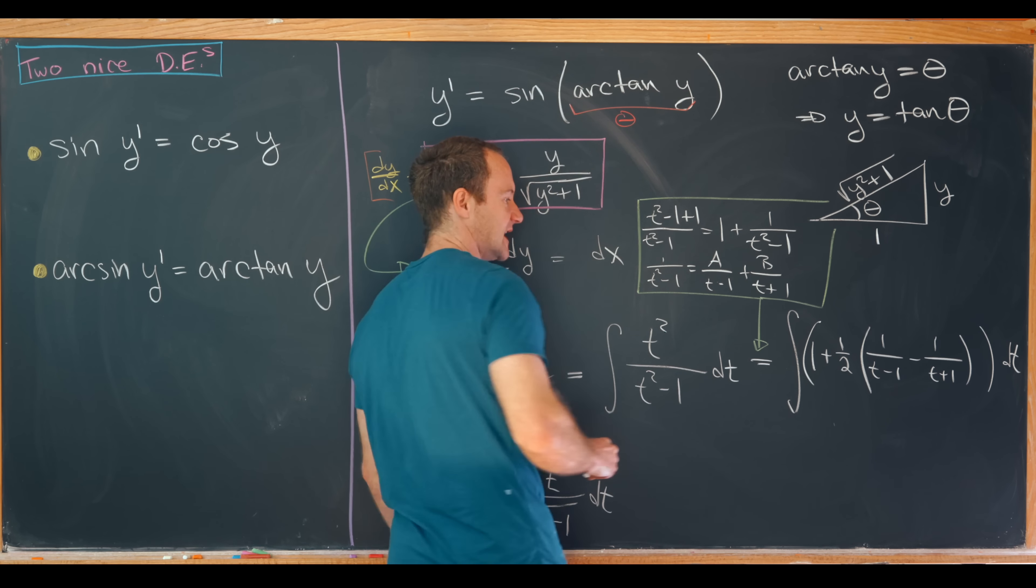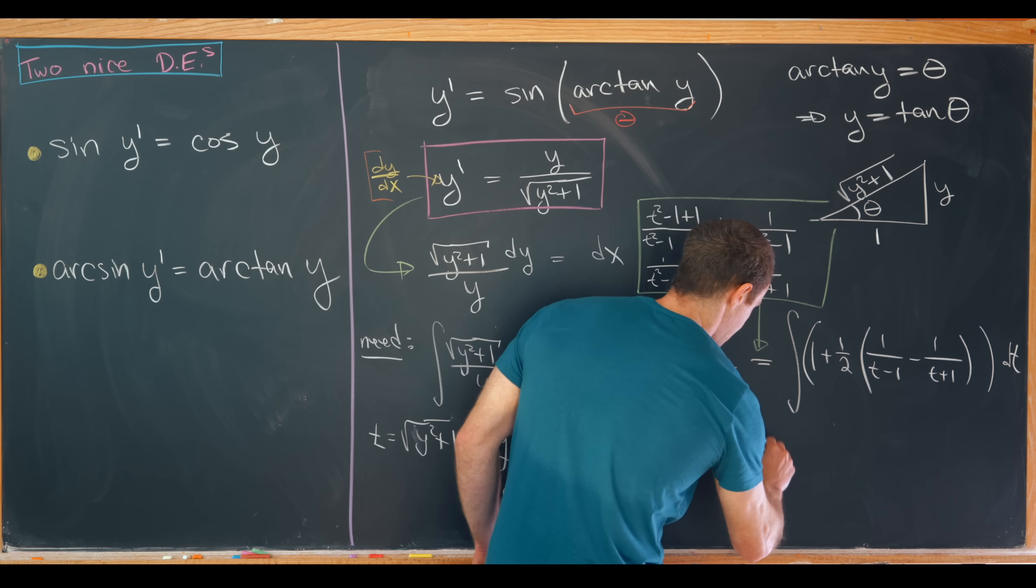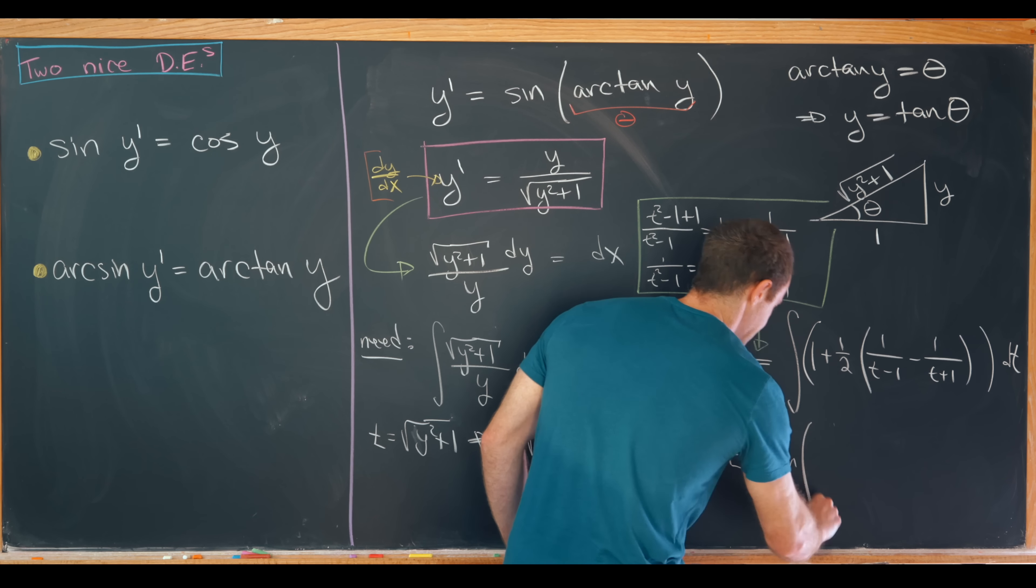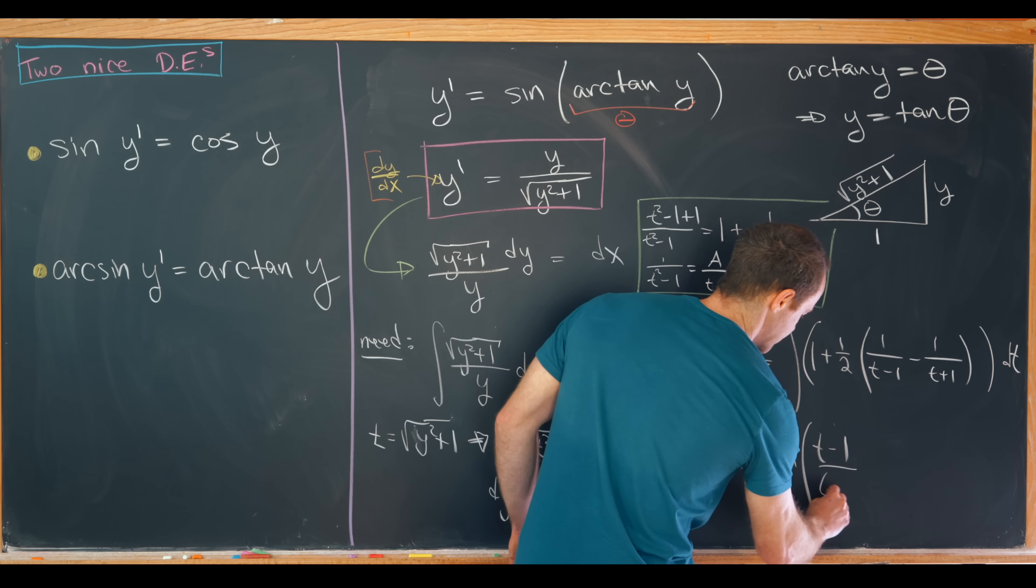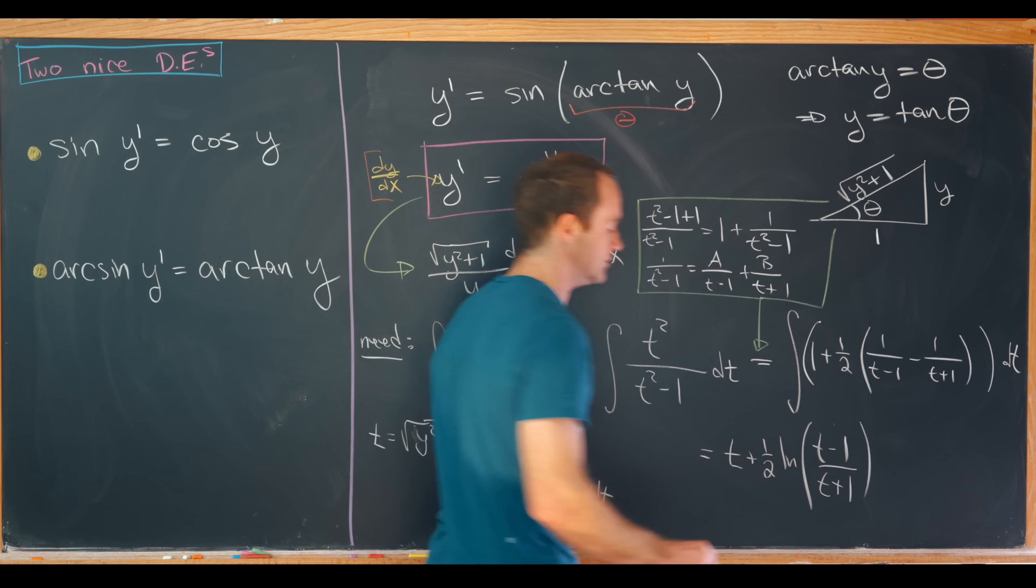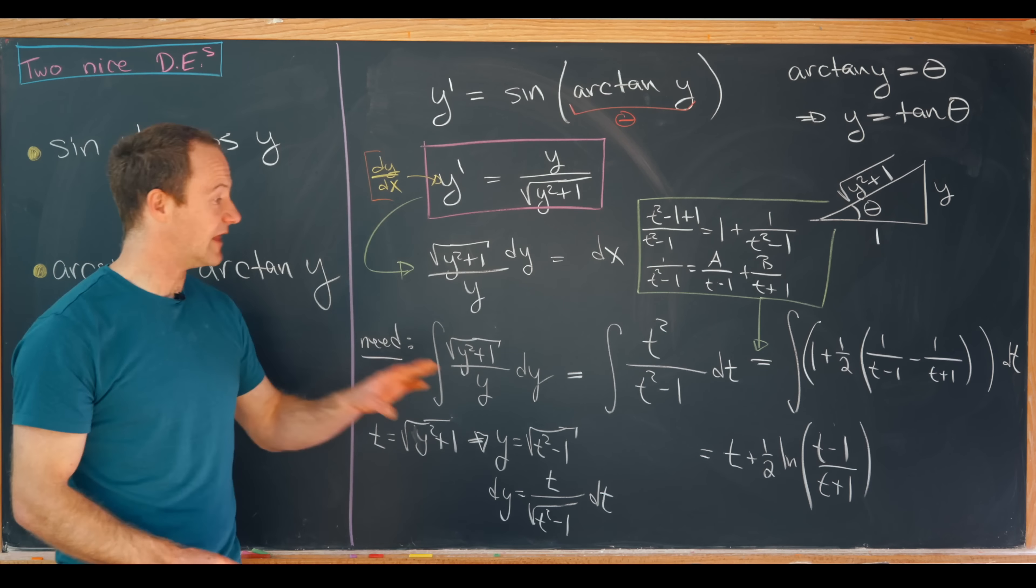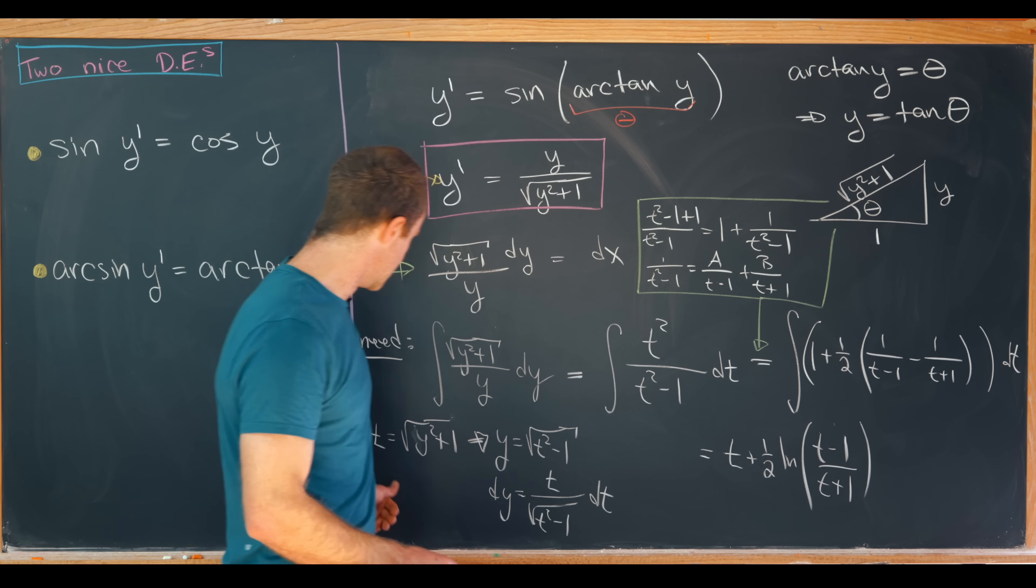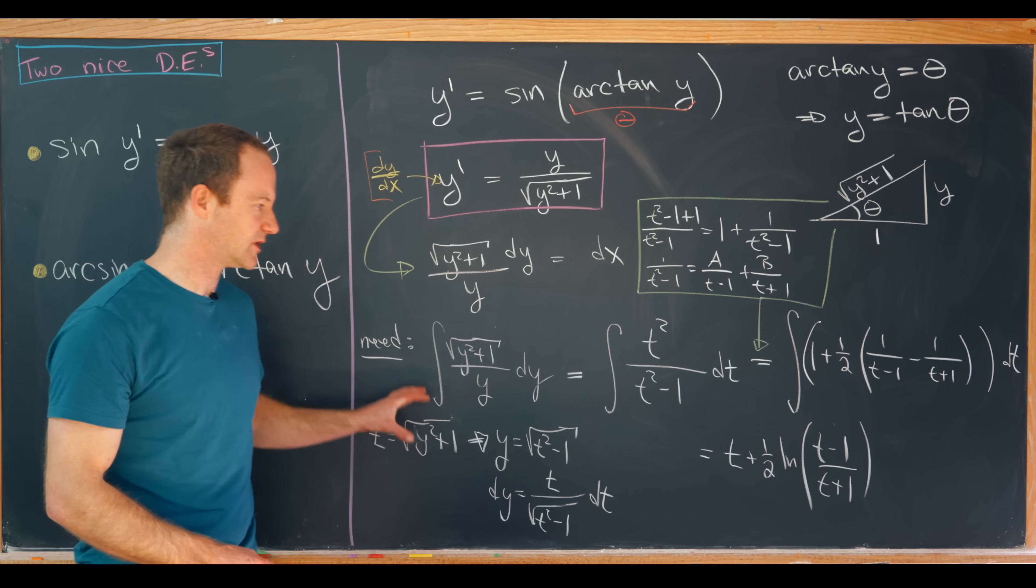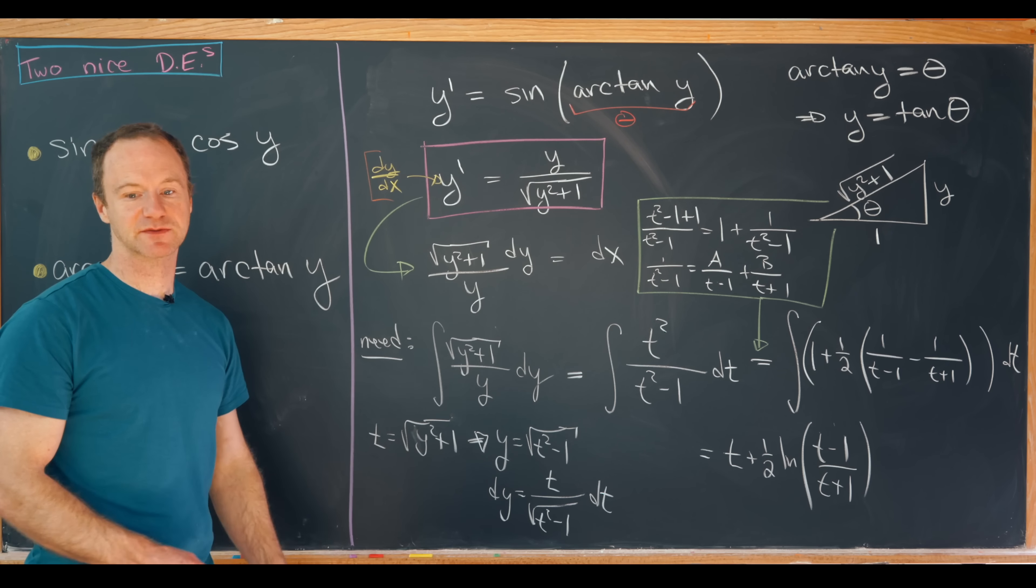So now we can take these anti-derivatives in a fairly straightforward way. That will give us t plus 1 half times the natural log of t minus 1 minus the natural log of t plus 1. But we can use log rules to put those together to natural log of t minus 1 over t plus 1. And then from there we can substitute back in our value of t in terms of y. So that'll give us square root of y squared plus 1 and then some stuff in that natural log. But we'll maybe summarize that on the next board.